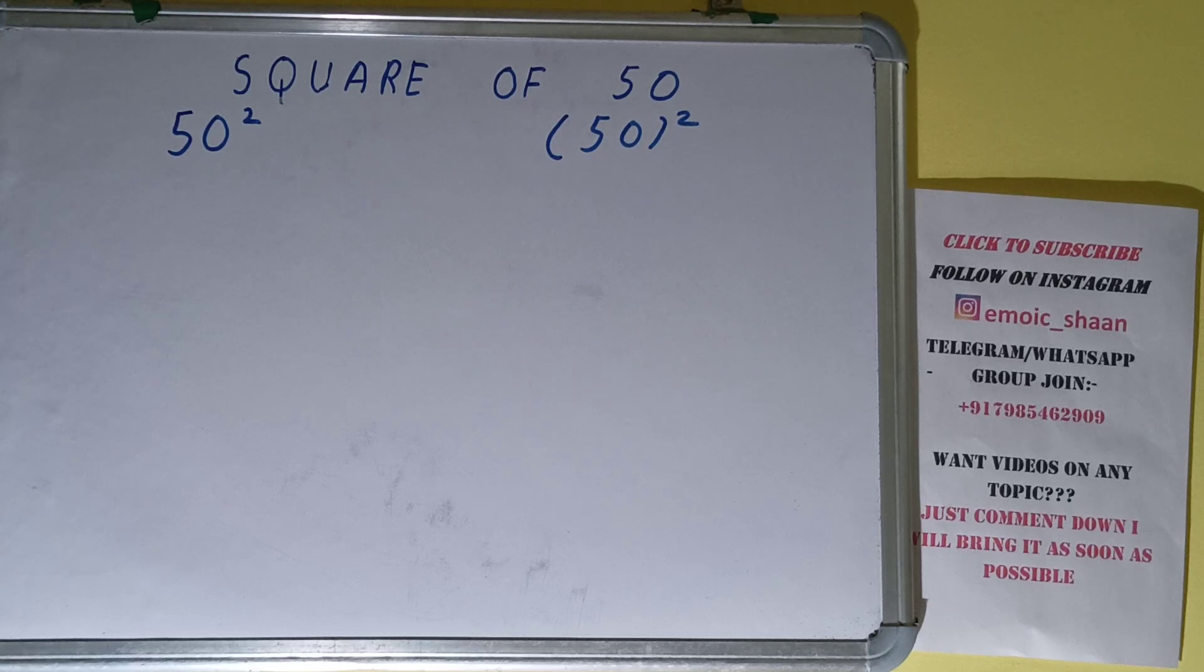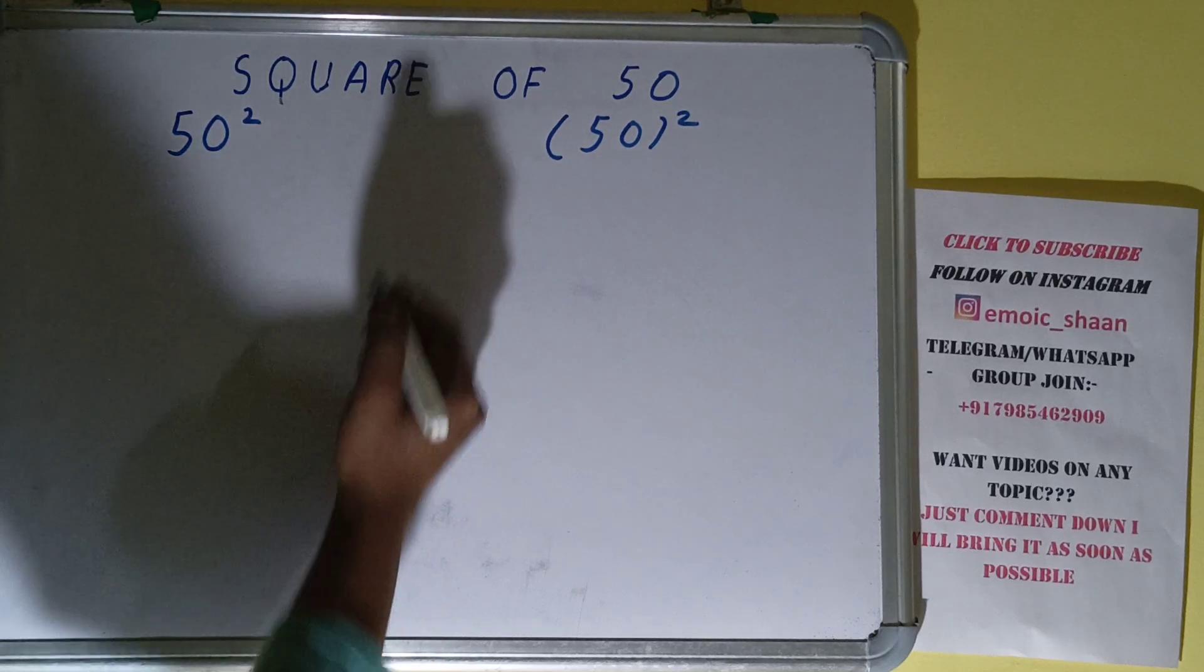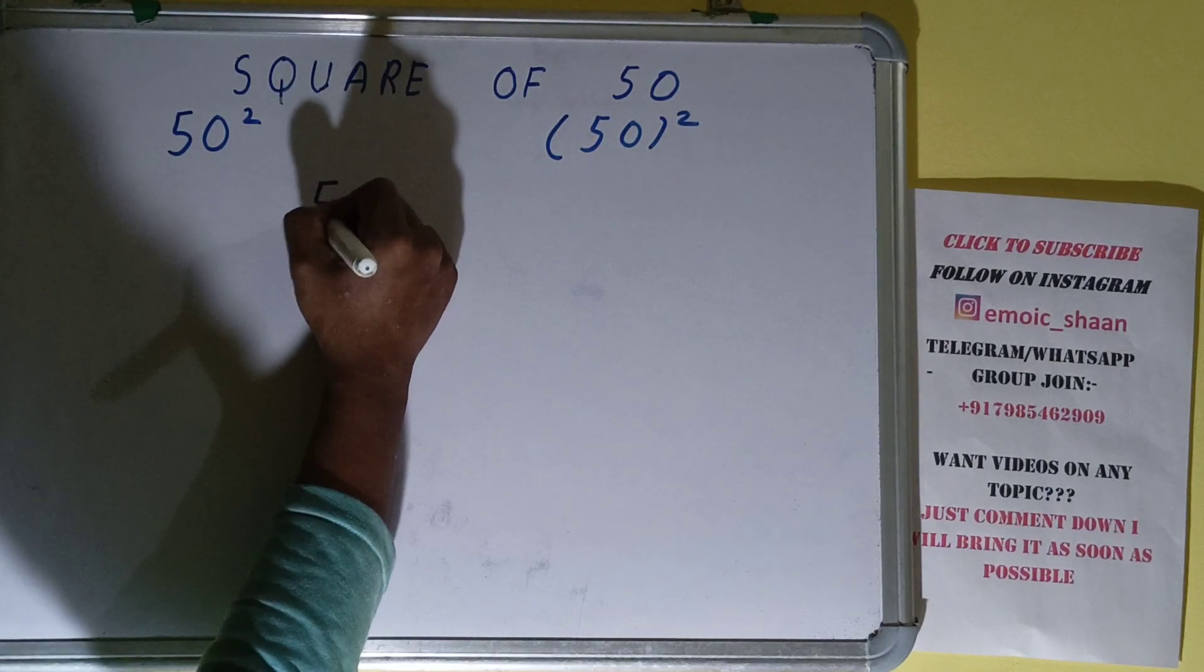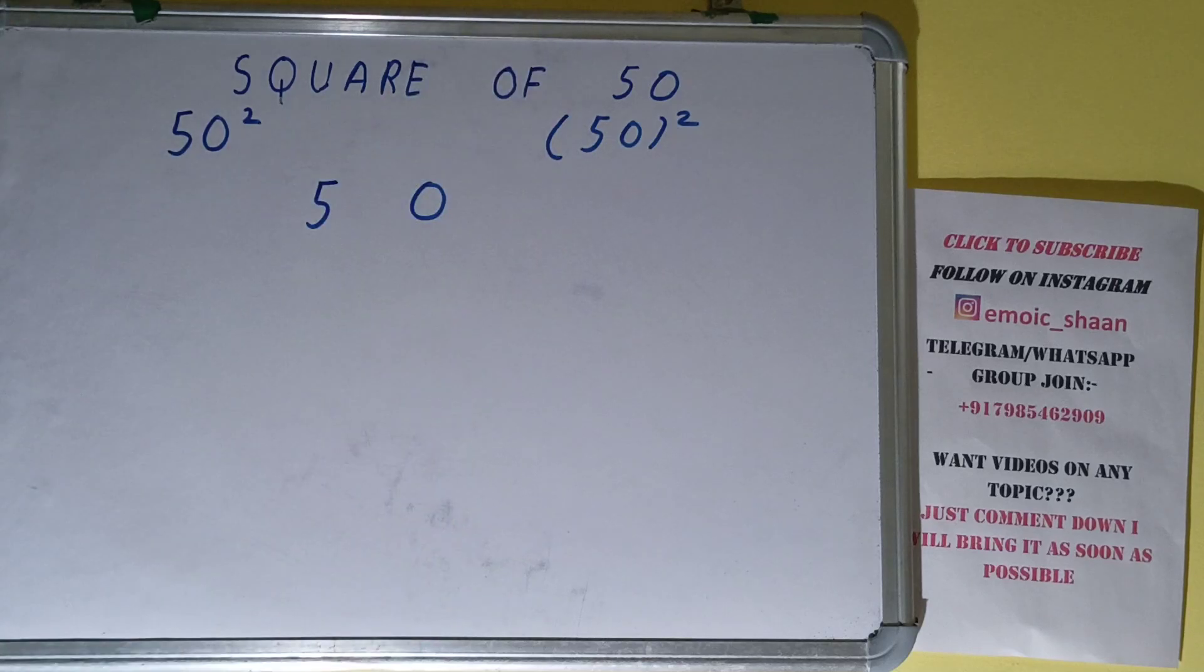Now let's move on to the solution. Square basically means multiplying the number by itself, and the number over here is 50. To find the square of it, we need to multiply 50 by 50.